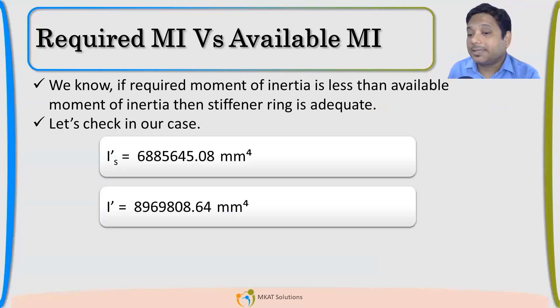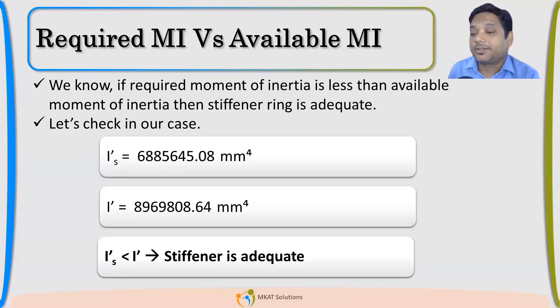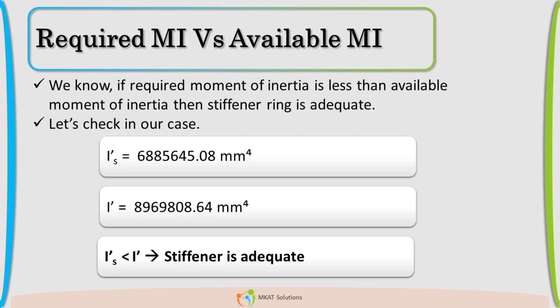So, IS dash which is the required moment of inertia as per code. And IDAS is the available. So, now you can see here available is more than the required. So, my stiffener whatever I have selected that is adequate. I hope you understood this topic. We have also uploaded the video of the required moment of inertia. The link is given in the description.